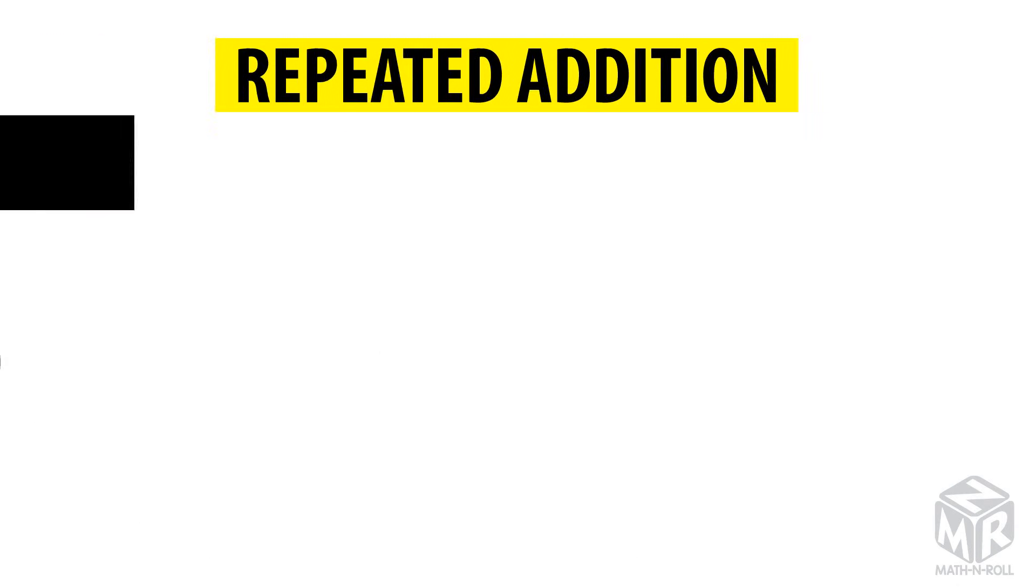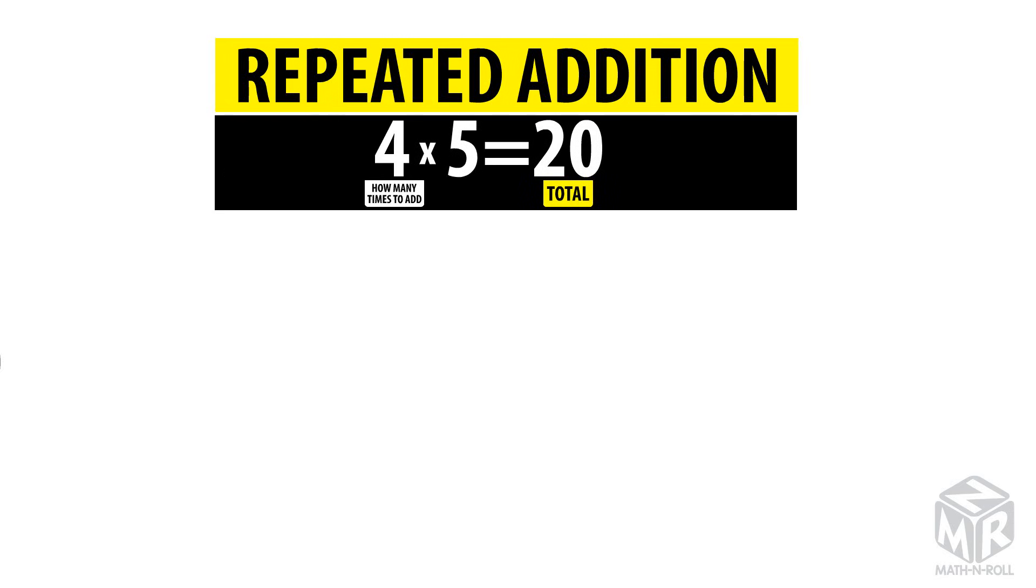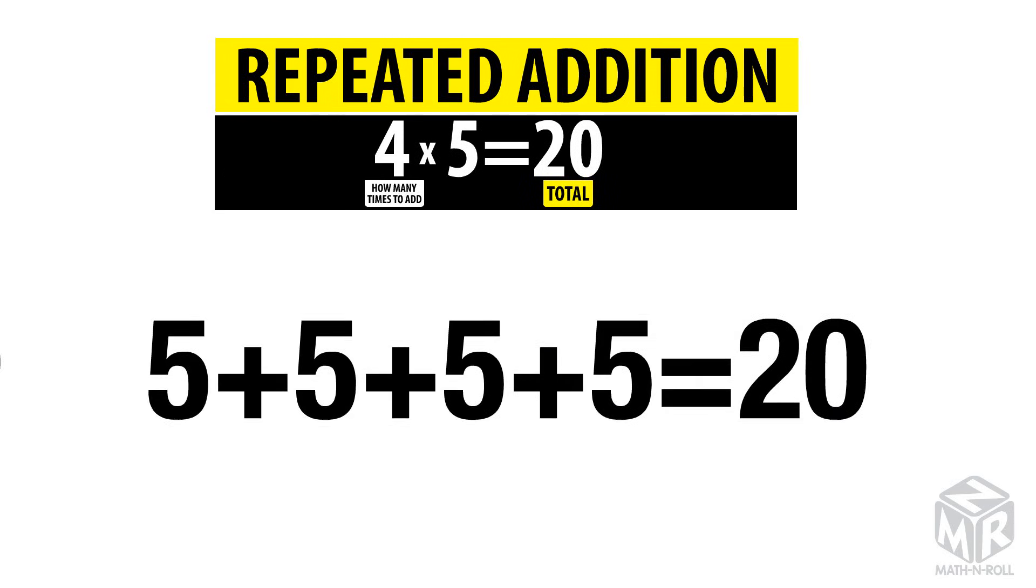Let's use repeated addition. We add five four times. Five plus five plus five plus five equals 20. So four times five equals 20.